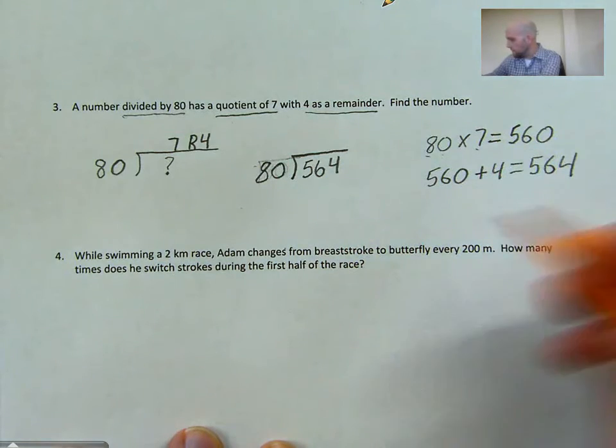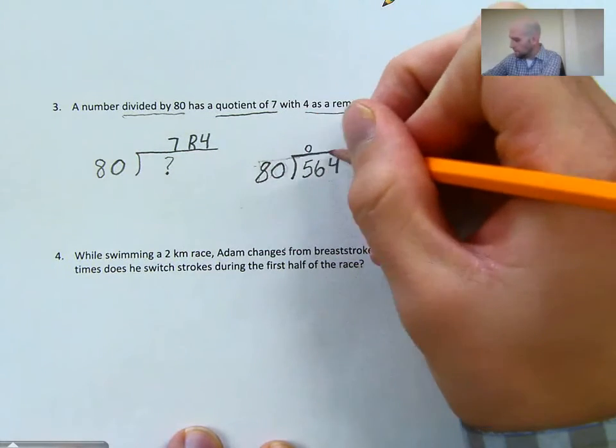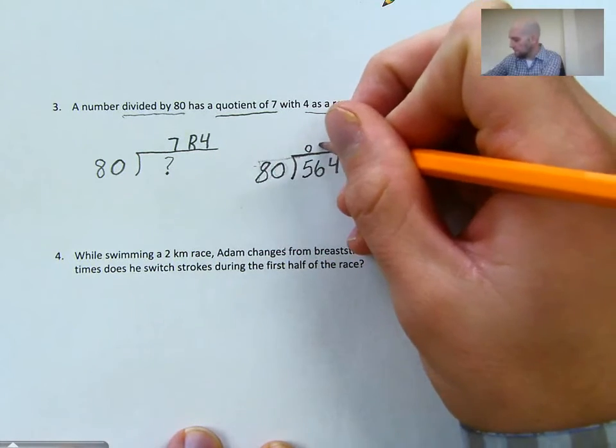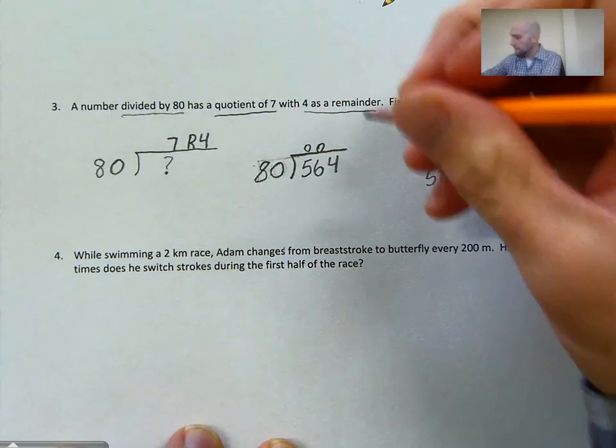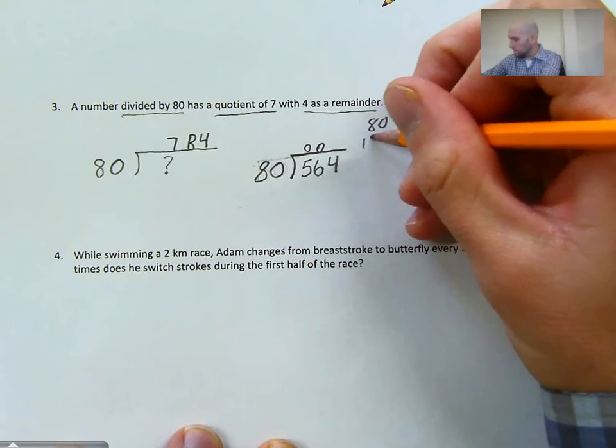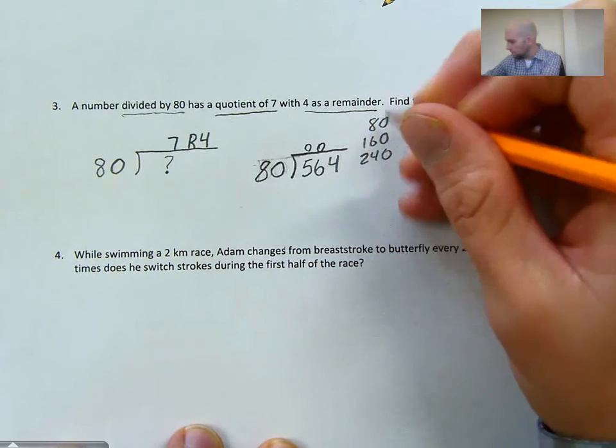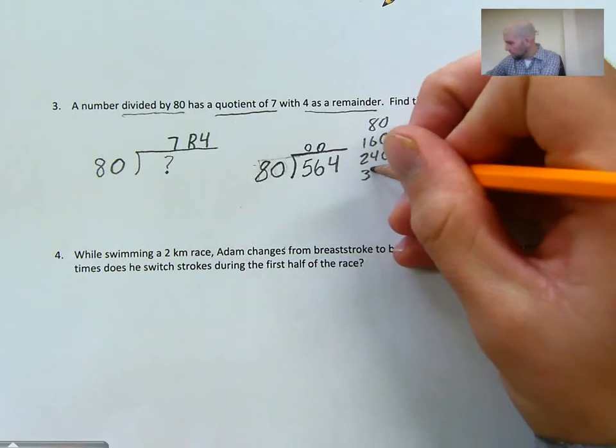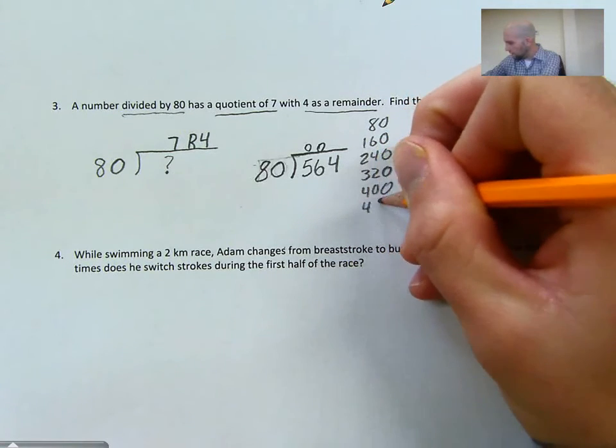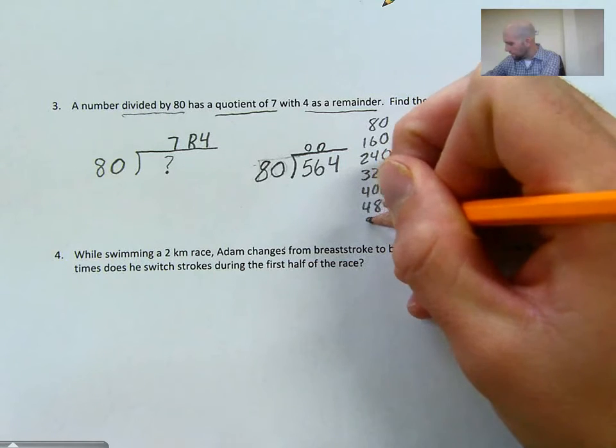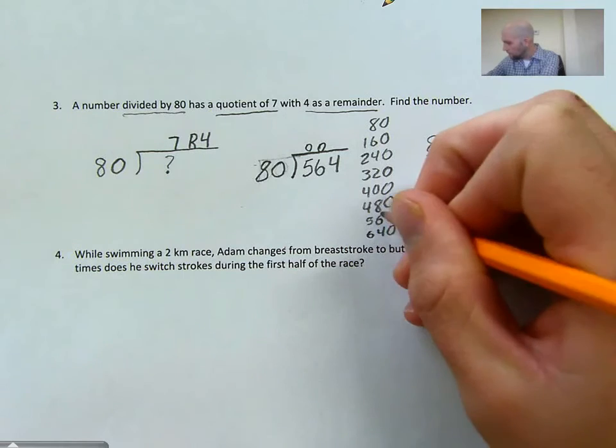And then we want to do 80 into 5 is 0. 80 does not go into 56 either. But it will go into 564. I can make my factor tree. And I can go 80, 160, 240, 320, 400, 480, 560, 640.